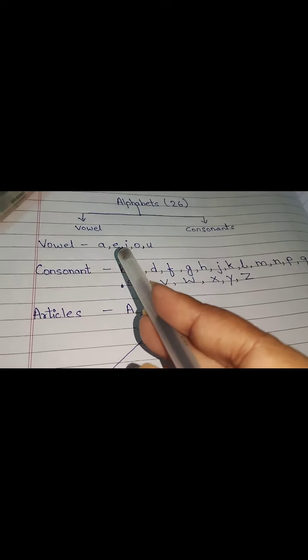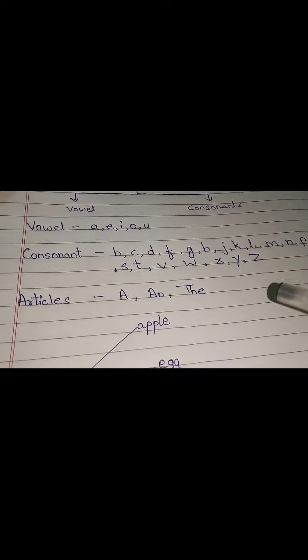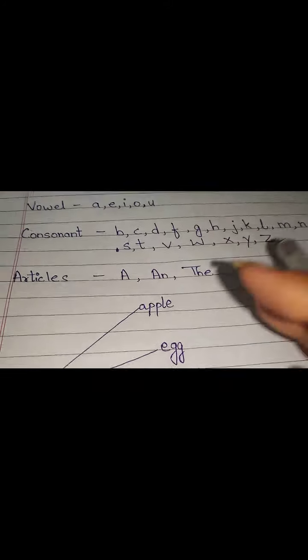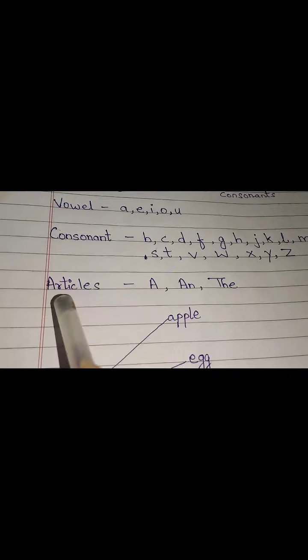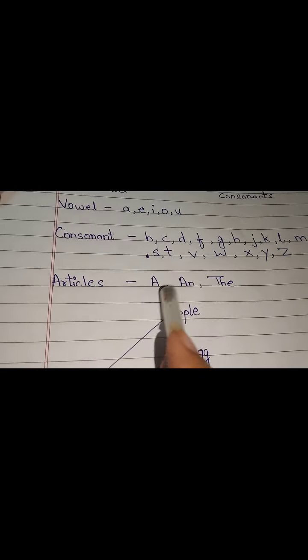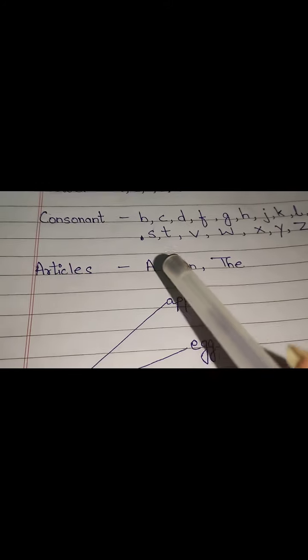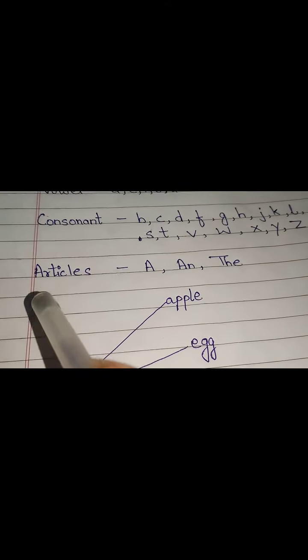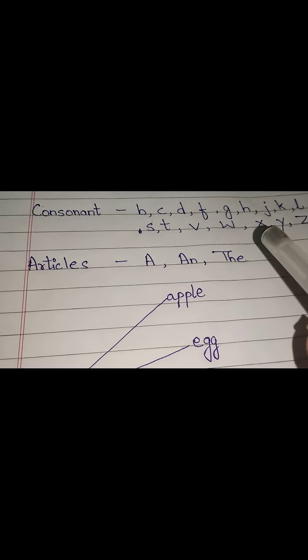In these consonants, you will notice A, E, I, O, U are missing — because those are vowels and these are consonants. Now we will come to what are articles. Articles are A and The.